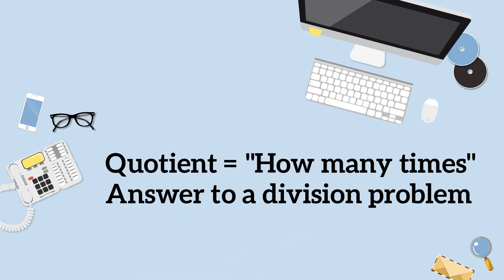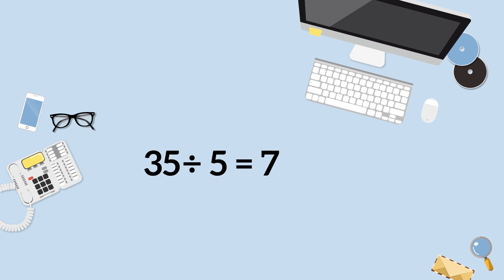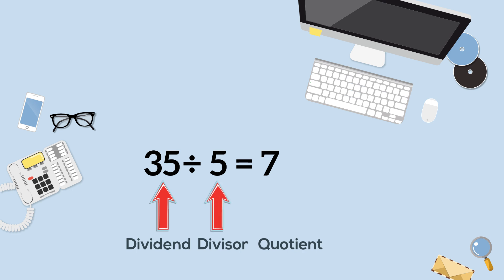There are several ways to find the quotient of two or more numbers. Let's first look at the simple parts of a division problem. The 35 is the dividend, the 5 is the divisor, and 7 would be the quotient.